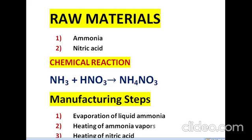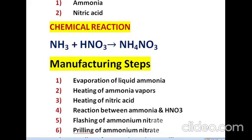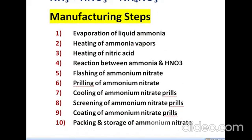Now we will enlist the manufacturing steps to manufacture Ammonium Nitrate. First: evaporation of liquid ammonia. Second: heating of ammonia vapors. Third: heating of nitric acid. Fourth: reaction between ammonia and HNO3. Fifth: flashing of ammonium nitrate. Sixth: prilling of ammonium nitrate. Seventh: cooling of ammonium nitrate prills. Eighth: screening of ammonium nitrate prills. Ninth: coating of ammonium nitrate prills. Tenth: packing and storage of ammonium nitrate prills.